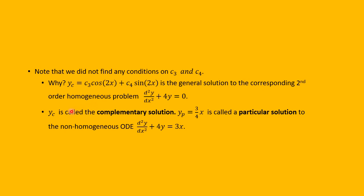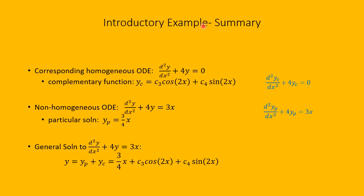y_c is the complementary solution; y_p is the particular solution to this non-homogeneous problem. The complementary solution satisfies the differential equation with 0 on the right side. The particular solution satisfies the whole non-homogeneous ODE. Let's summarize: we were looking at y'' + 4y = 3x, non-homogeneous.